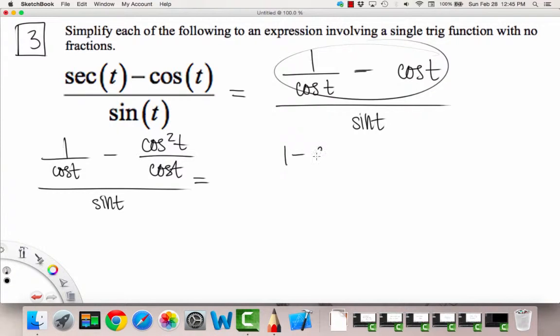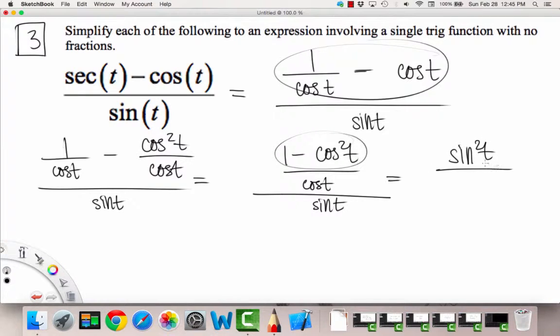So we can combine the top, so we have one minus cosine squared t over cosine t, and then being divided by sine t. So the top actually simplifies to just a sine squared t, because of the Pythagorean identity that we remember.